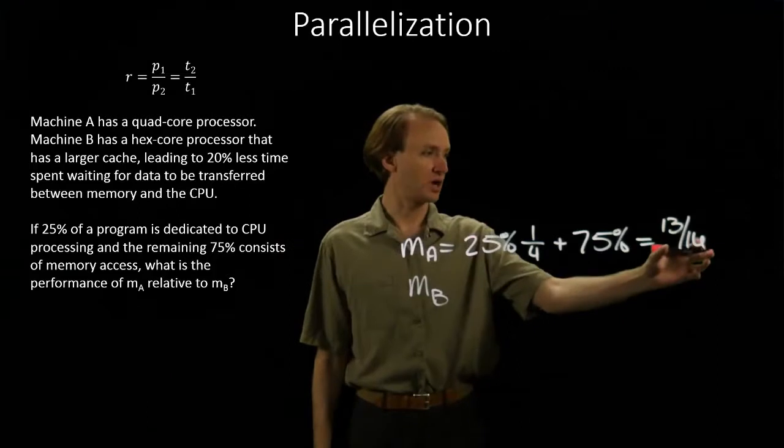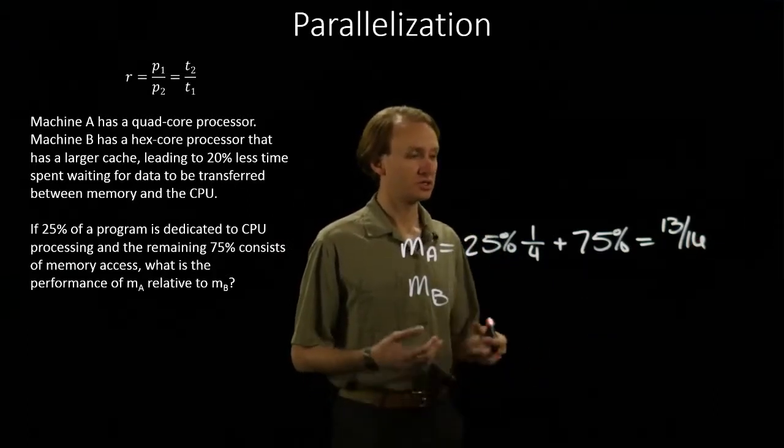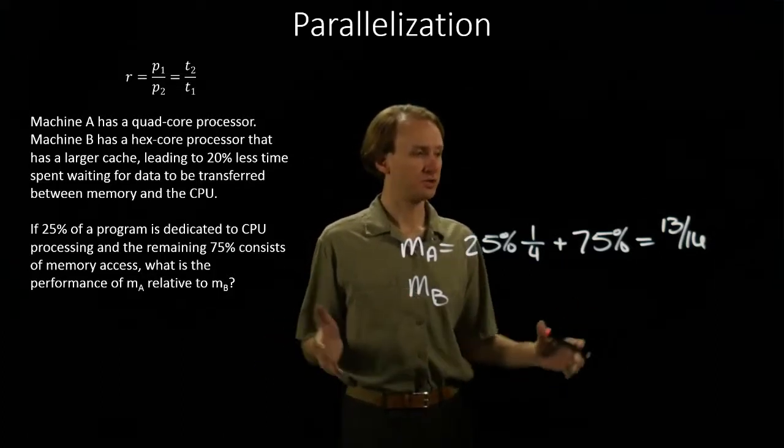So this is how much time it takes for machine A to run this task relative to some single-core processor that has no speed-ups whatsoever.